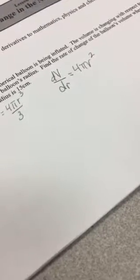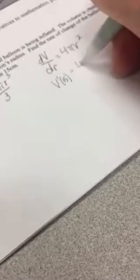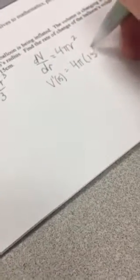And it says find the rate of change, which this is our formula for rate of change, of the balloon's volume when its radius is 15. So I want to know the derivative of the volume when the radius is 15. So I'm going to plug 15 in here. And I would get, if I leave it in exact terms, I would get 900 pi.